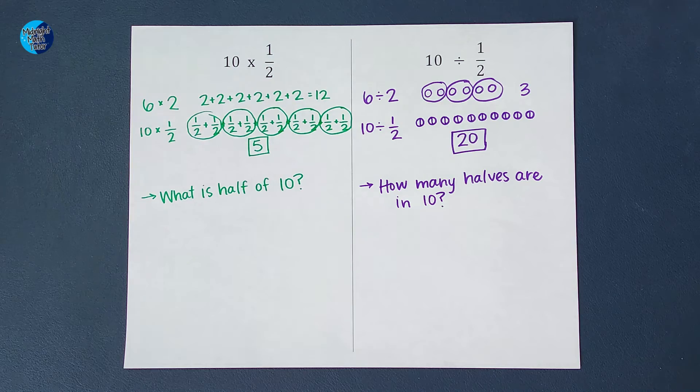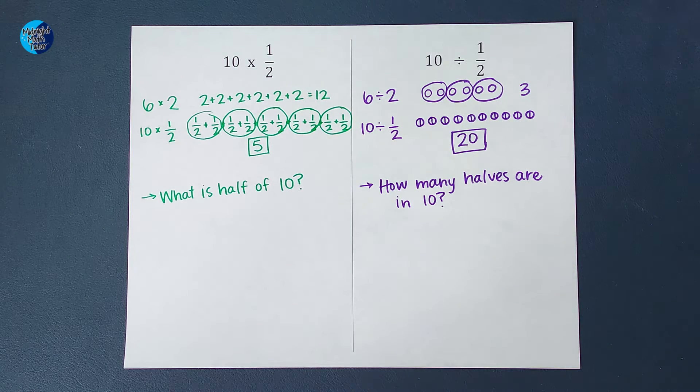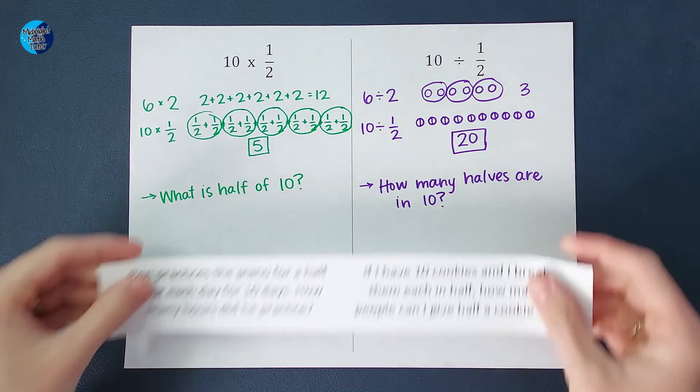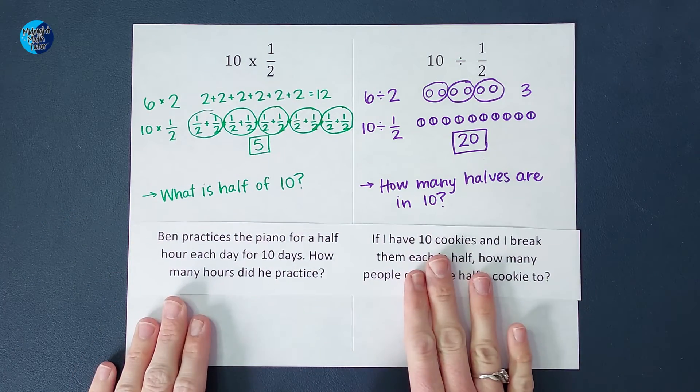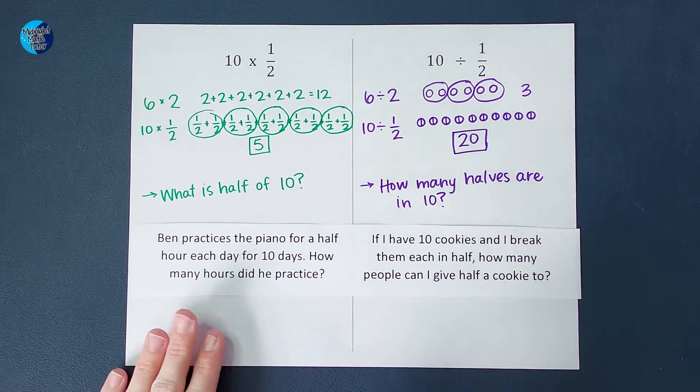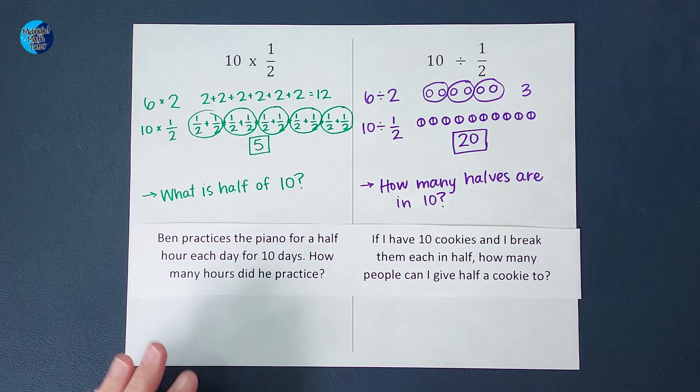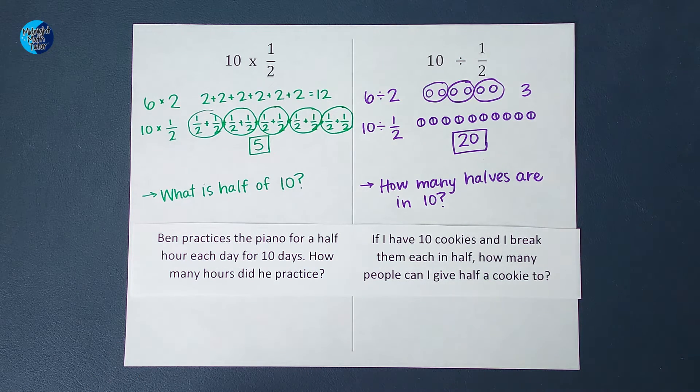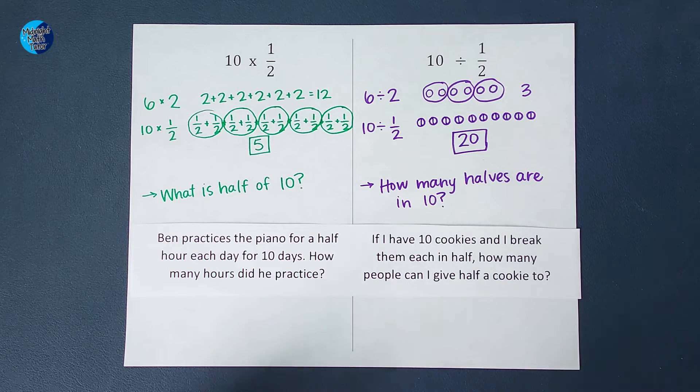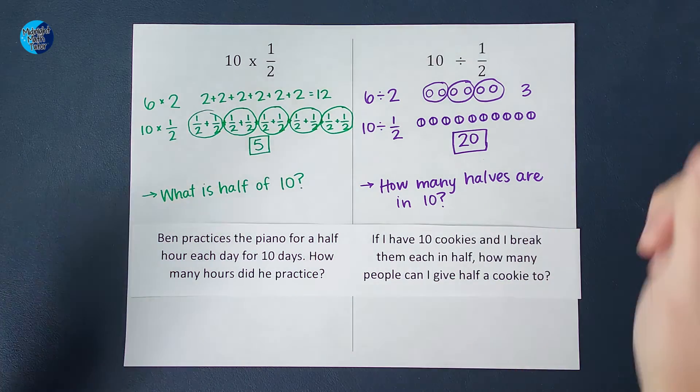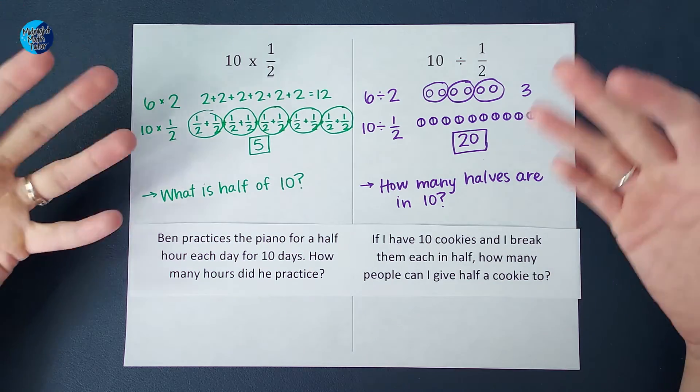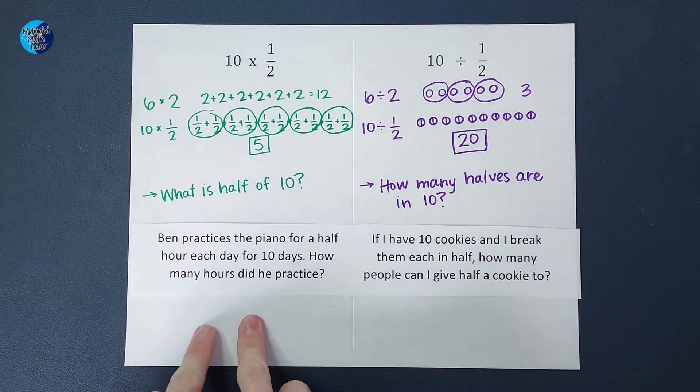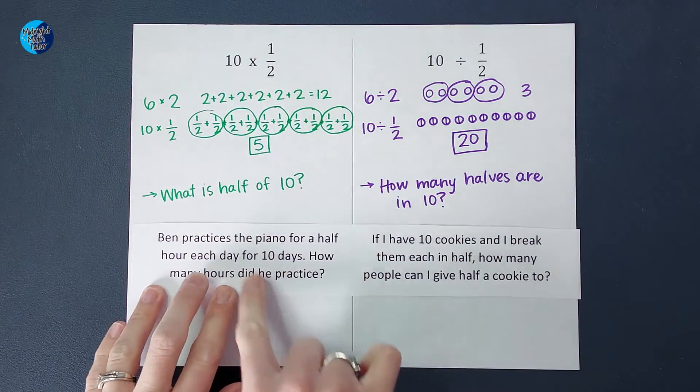Now, what are some real life problems that this could apply to? I'm so glad you asked. So 10 times one half. A problem that this could be is Ben practices the piano for a half hour each day for 10 days. How many hours did he practice? Well, you could probably figure out pretty fast. Oh, he practiced for five hours. That's an example of 10 times one half.